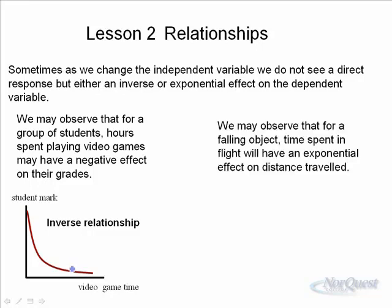When you drop an object from a high building, in the first second of travel the object has just left your hand and isn't moving very fast, so gravity accelerates it only to a certain speed. In the second second, it already has that initial speed and accelerates to an even higher speed. So in every second of travel, the object is moving faster and therefore must travel more distance. This is an example of an exponential relationship.